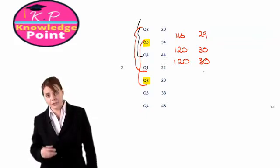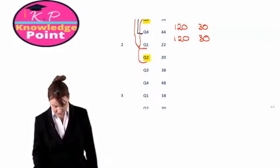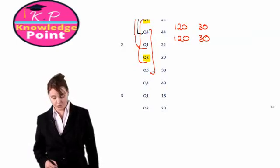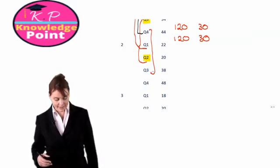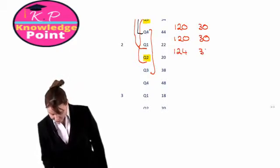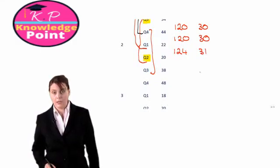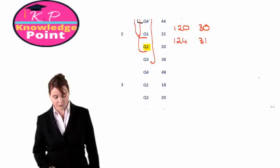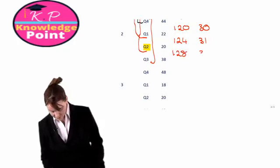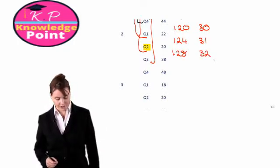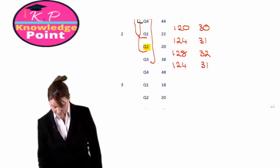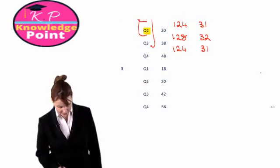We continue to the next 4-quarter period: Q4 year 1 up to Q3 year 2. You should get a total of 124 and an average of 31. The next 4-quarter period covers all 4 quarters of year 2, giving a total of 128 and a moving average of 32. We add these totals and averages into our table.